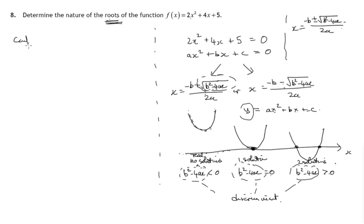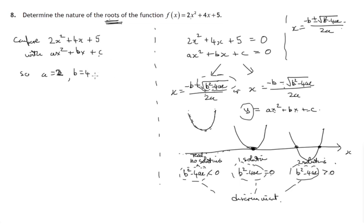We'll compare 2x squared plus 4x plus 5 with ax squared plus bx plus c. There are 2 lots of x squared, so a equals 2. There are 4 x's, so b equals 4. The constant term is 5, so c equals 5. The discriminant — that's the expression under the square root sign in the quadratic formula — b squared minus 4ac in this case will be 4 squared minus 4 times 2 times 5.